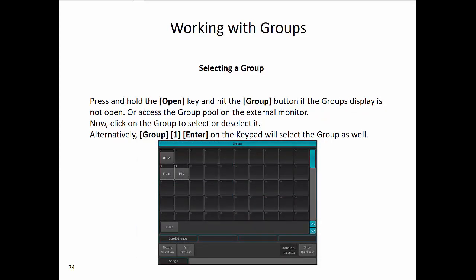To select a group, press and hold the Open key and hit the Group button — the group display will appear on the internal monitor. You can also simply access the group from the group pool on the external monitor. Alternatively, there is a command line solution where you can type Group, Number, Enter on the keypad to select a group.